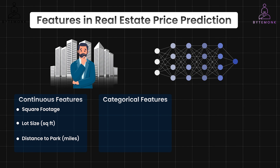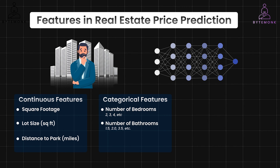Categorical features represent distinct categories or options. Examples include the number of bedrooms, which could be 2, 3, 4, etc.; the number of bathrooms, which could be 1.5, 2.0, or 3.5 depending on the presence of half baths; and maybe school rating, which could be ranked from poor to excellent, assuming a predefined rating system is already in place.